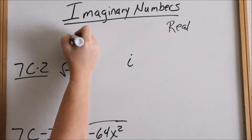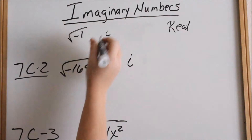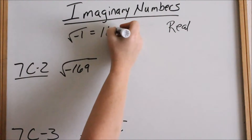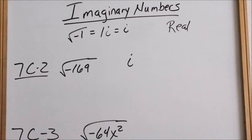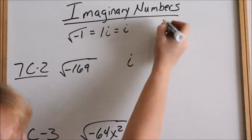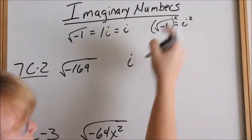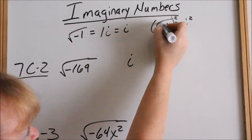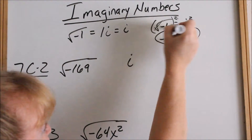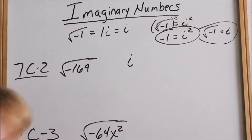By definition, the square root of negative 1: if you pull the negative out of the radical as an i, and then the square root of 1 is just 1. So the square root of negative 1 is 1i, or we just say i. If you take that equation — square root of negative 1 equals i — and square both sides, the radical cancels with the exponent and you get negative 1 equals i squared. These two facts are important to know for this lesson.